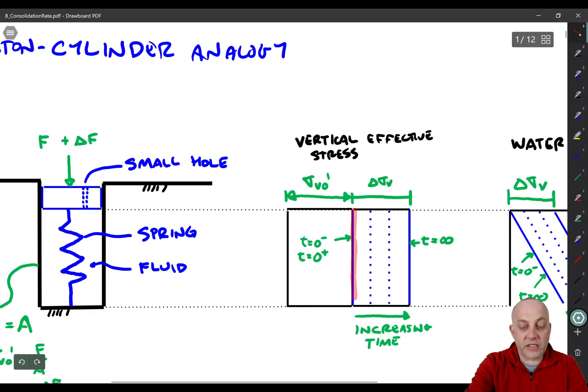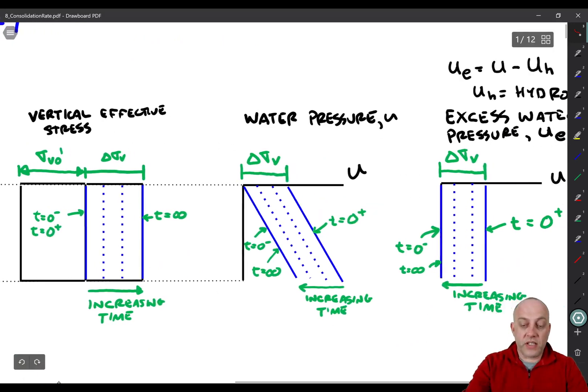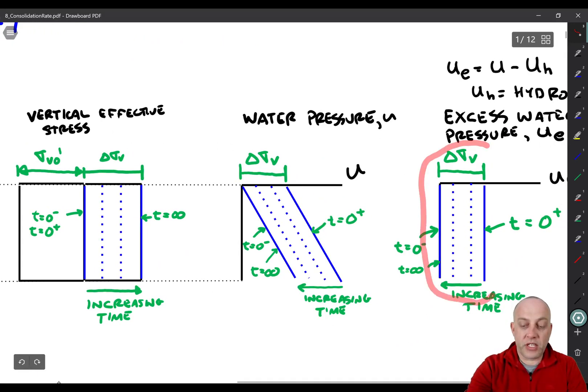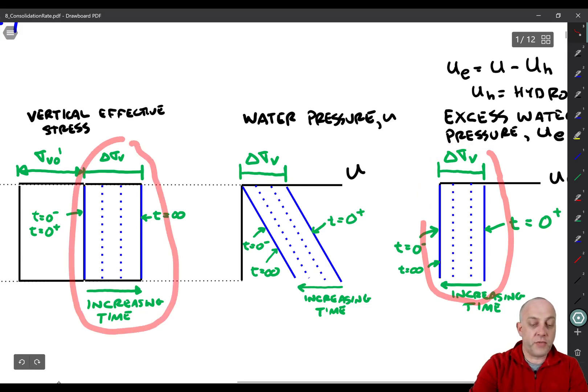And then only as the excess pore pressure decreases do we get an increase in effective stress. As water goes out, load is transferred to the spring. So you can see that there's an inverse relationship here between the change in excess pressure over time and the increase in effective stress over time.